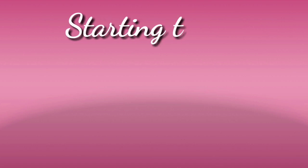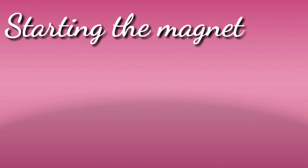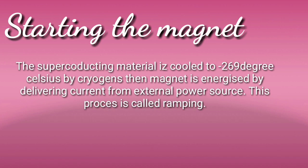Ab aata hai starting the magnet — magnet start kaise karte hain. Sabse pehle superconducting material ko minus 269 degree Celsius tak cool karte hain. Yeh kiya jata hai cryogen se — cryogen kya hai, helium aur nitrogen gas hoti hai. Phir isko energize kiya jata hai external power source se, jo bhi superconducting wire se kiya jata hai. Is process ko bolte hain ramping.